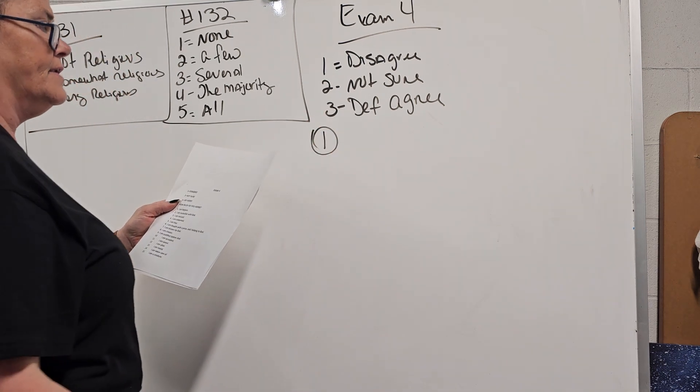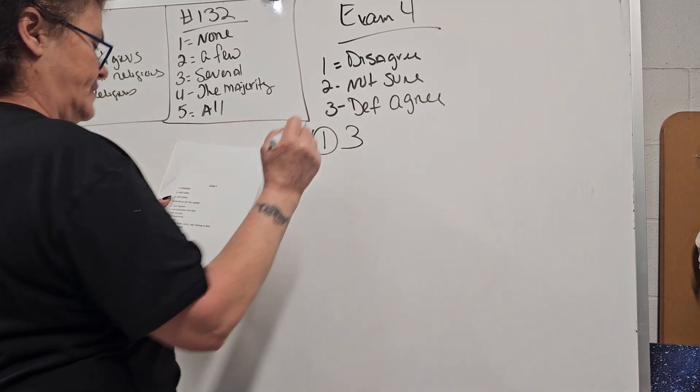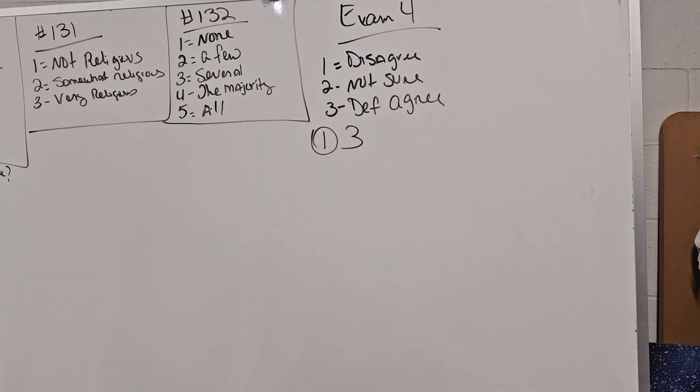One, I am forgiven. Do you disagree or not sure, you definitely agree? Two I am reconciled with God. Three I am rescued. Four I am redeemed. Five I am free. Six I am bought with a price and I belong to God. Seven I am known by God. Eight I am chosen. Nine I'm justified before God. Ten I'm accepted.